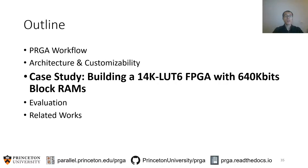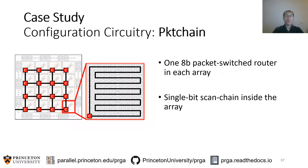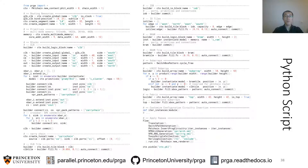Let's now take a look at an example that builds an FPGA with 14,000 LUT6s. The figure on the left shows the logical layout of the FPGA, which consists of 16 sub-arrays. Each sub-array contains 89 CLBs and 5 block RAMs. This FPGA has 288 routing tracks per channel, 10 multimodal LUT6s per CLB, totaling 14,000 LUTs and 640 kilobits of RAM. We use the PacketChain configuration circuitry, and all sub-arrays are connected into an 8-bit packet-switch network to achieve faster bitstream loading. Here's the script that builds this example FPGA.